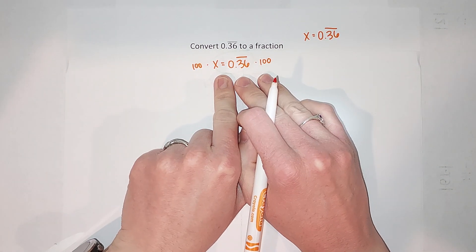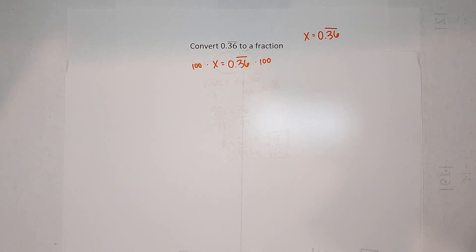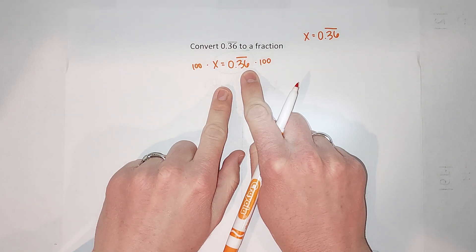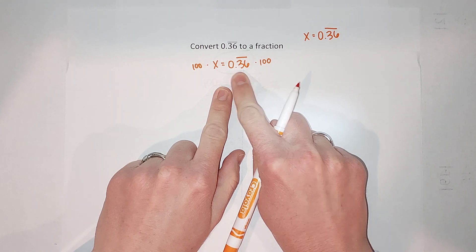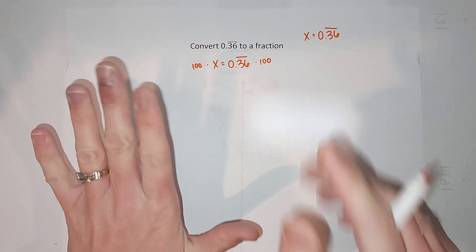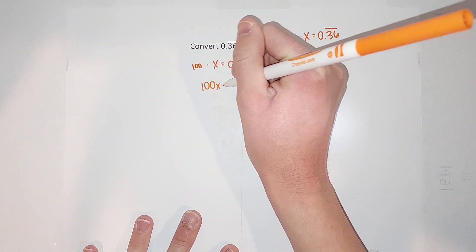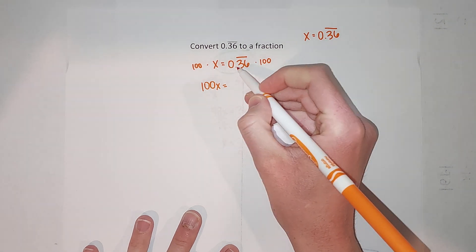We're multiplying by 100 because there's two numbers after the decimal that repeat. All right, so once I do that, watch what happens: we get 100x equals, when I multiply by 100, it just moves that decimal over two places, so then I have 36.36 repeating.